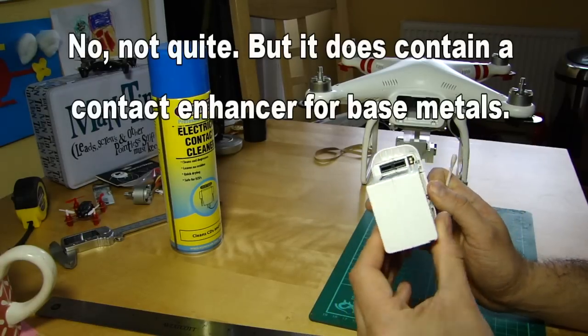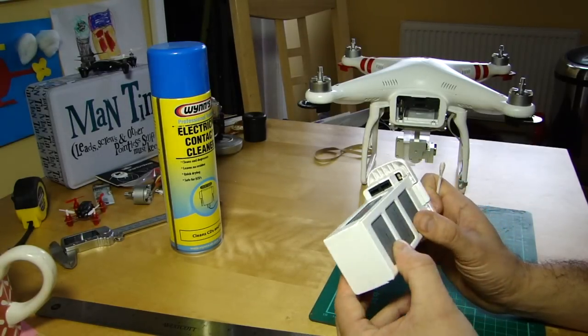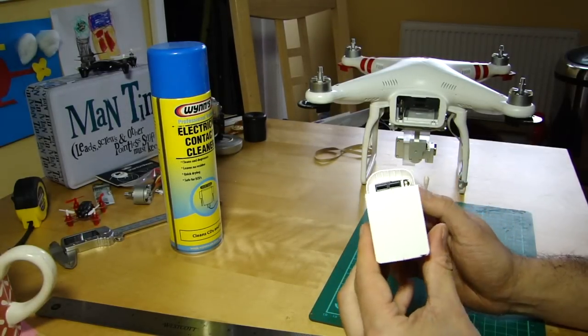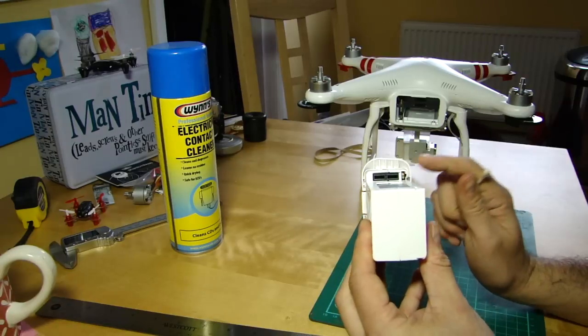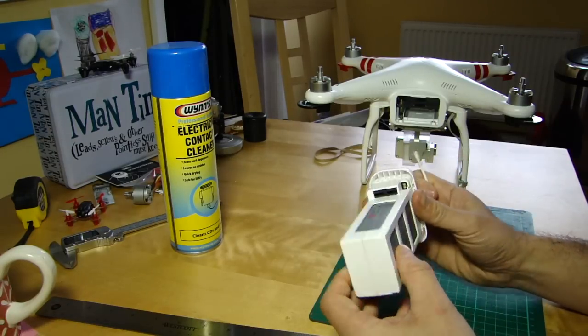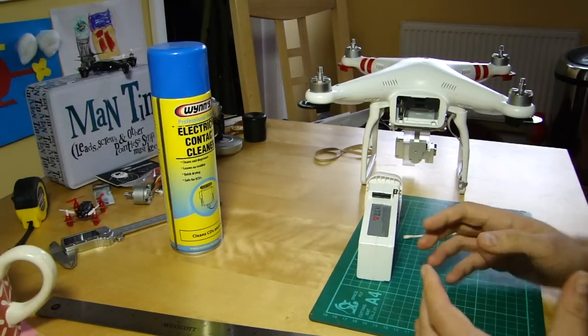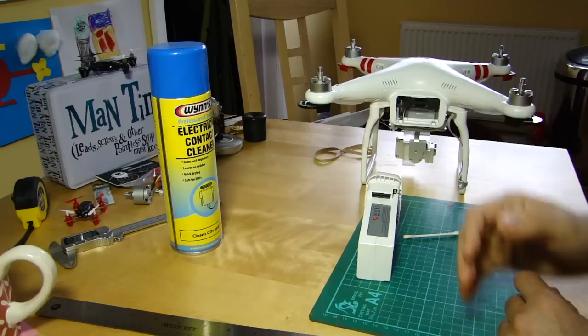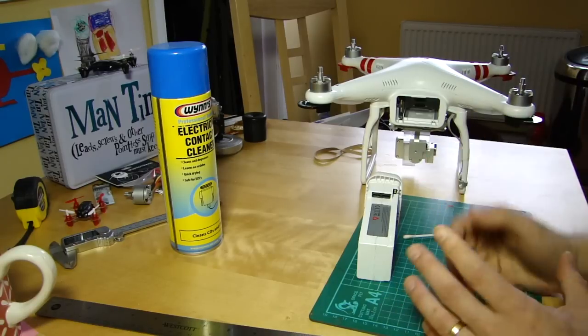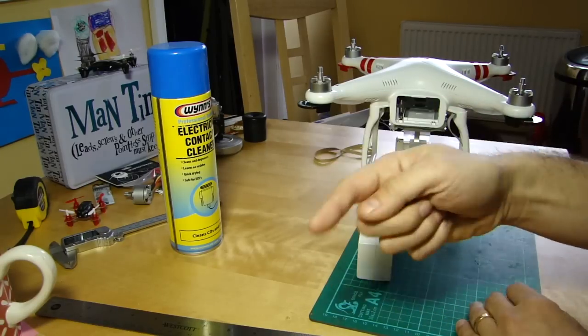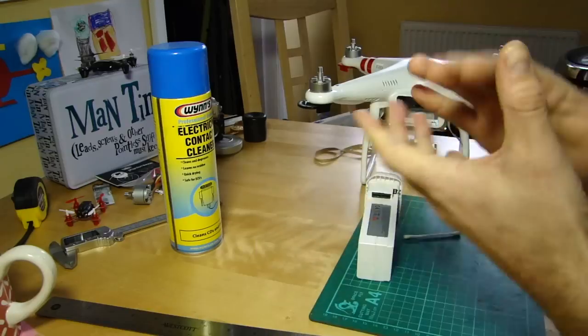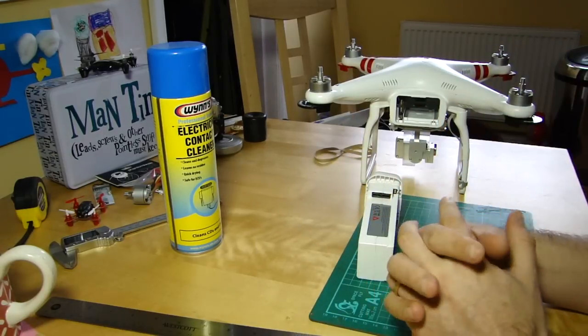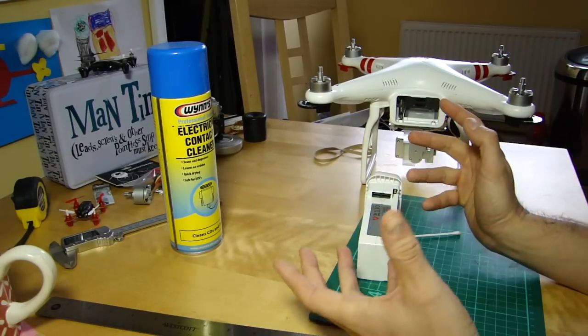Again I haven't used that, I haven't had to yet. I've got a few batteries so they tend to cycle around in use. But if you are having problems like that then Deoxit Gold seems to get very good press in all the DJI forums and so on. Again I believe you can get it quite readily from Amazon - I'm not sure, I haven't checked - but if you can I'll put a link down in the description or I'll put a link to the company's website and you can find out distributors.